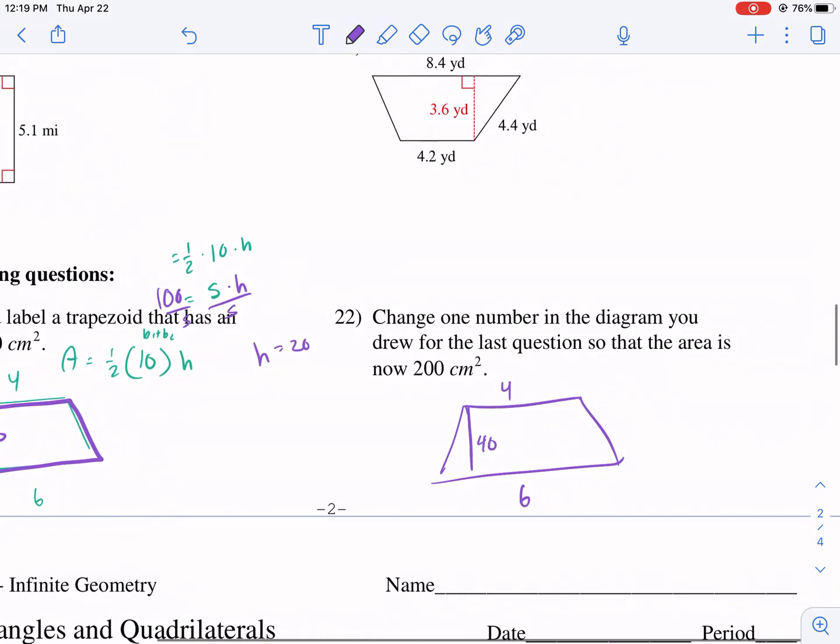And just to show you what that would look like, 4 plus, we have 4 plus 6 times 1 half times 40. That's 10 times 1 half times 40. That's going to be 20 times 10, which is 200 centimeters squared. I probably should have put centimeters here, but I hope you get it. That's all there is to it.